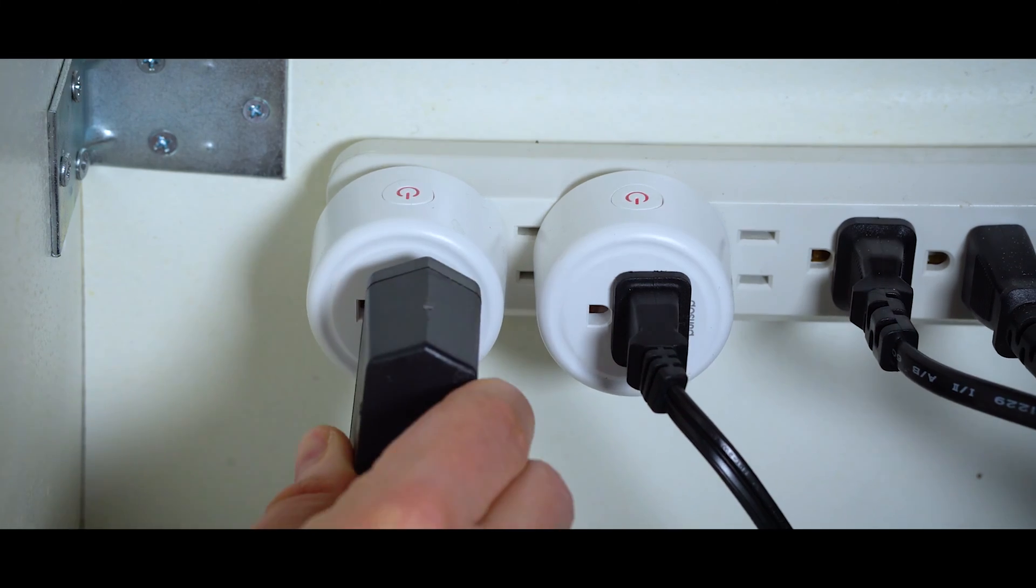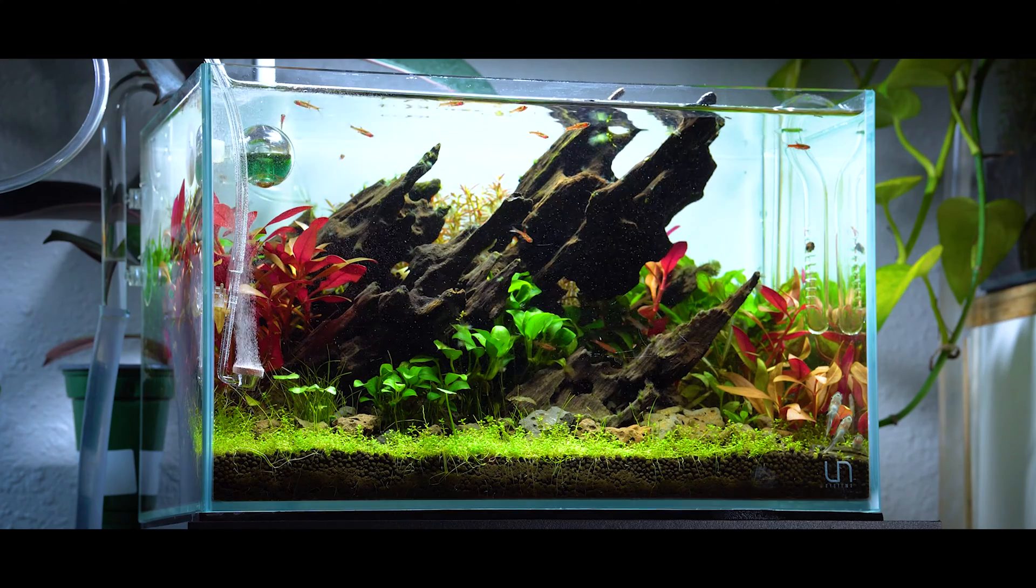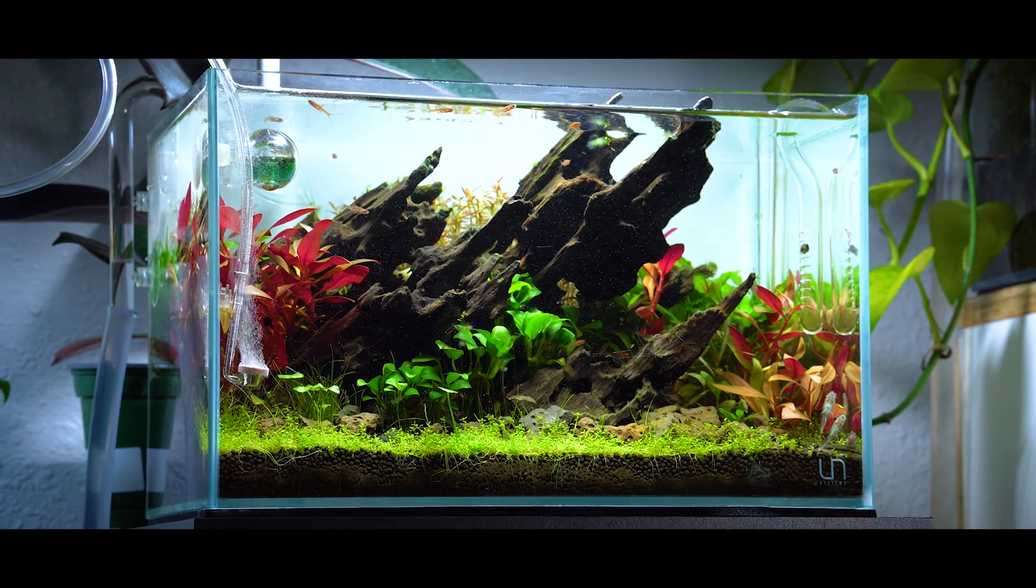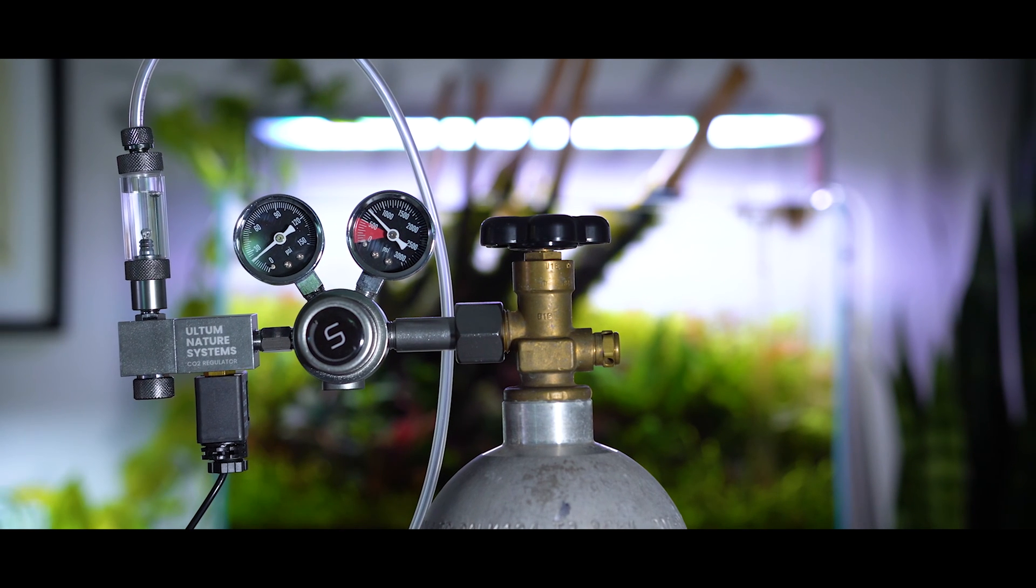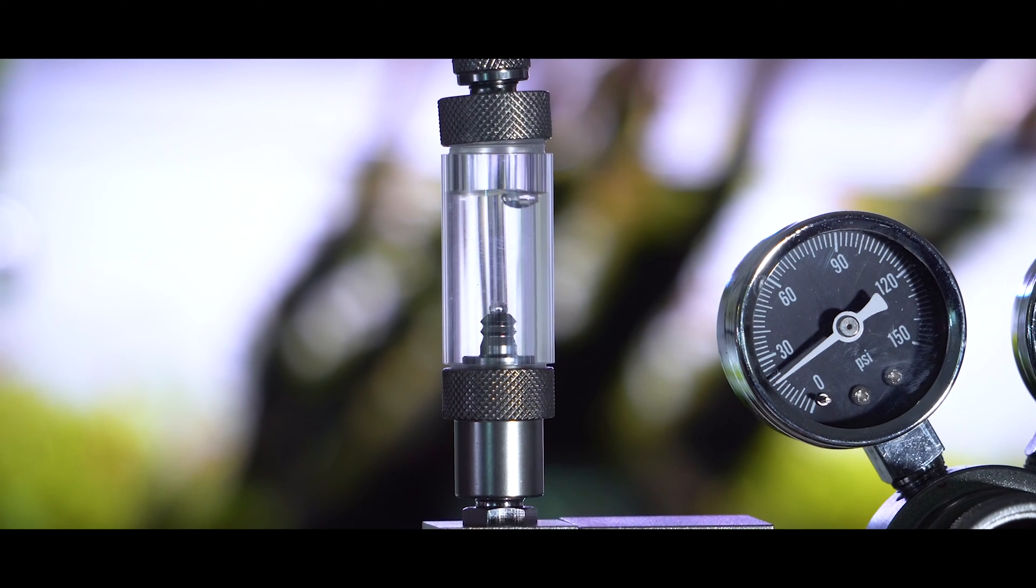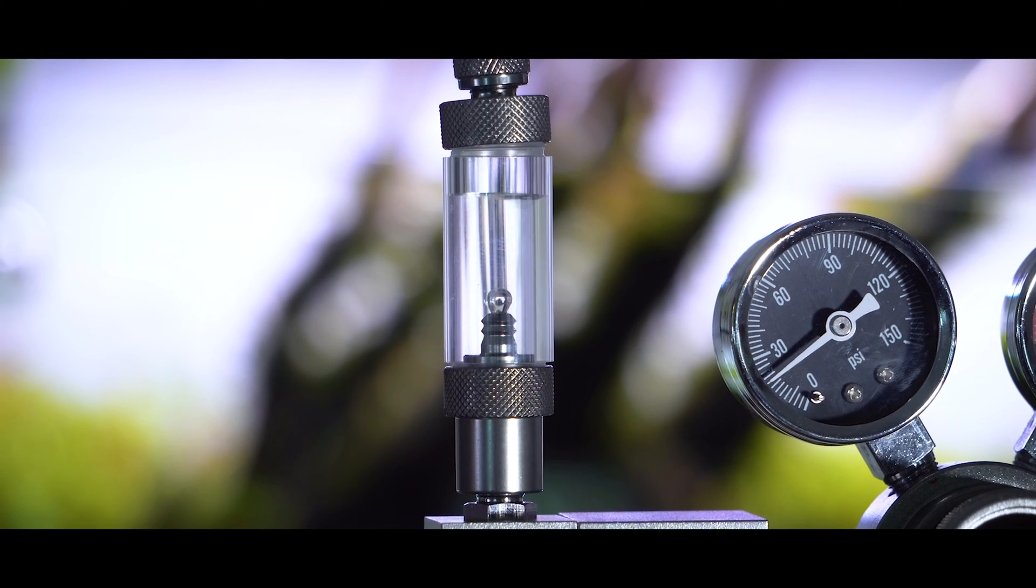Now it's time to power on the regulator, place the CO2 diffuser inside of your aquarium, and adjust the needle valve. Depending on the size of your tank, you're going to need a different bubble per second. It really depends on your filtration, where the diffuser is, the type of diffuser you're using. I can't give you a blanket statement for what bubbles per second you should use, but a good starting point is about one to three bubbles per second depending on the size of the tank.